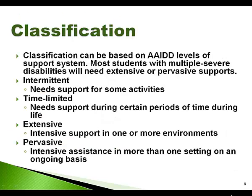Classification can be based on AAIDD's levels of support system. Most students with multiple severe disabilities will need extensive or pervasive supports. The levels of support include: intermittent, referring to needing support for some activities; time limited, referring to needing support during certain periods of life; extensive, referring to intensive support in one or more environments; and pervasive, referring to intensive assistance in more than one setting on an ongoing basis. Please refer to your book for more specific examples of these four levels of support.